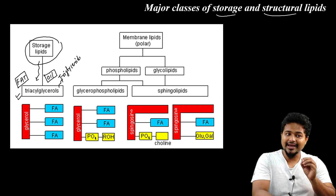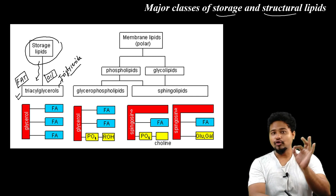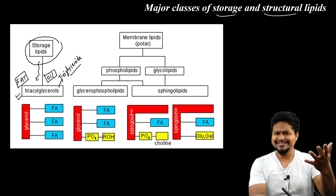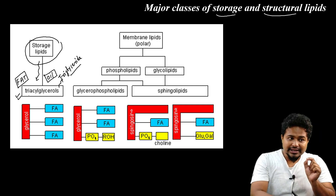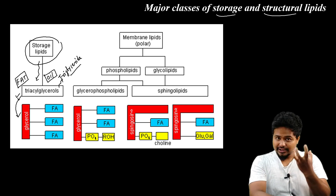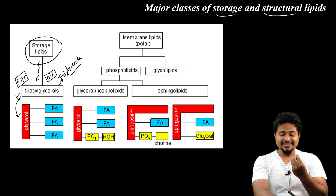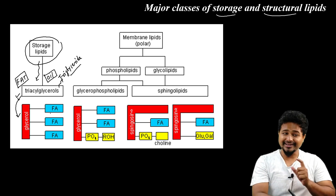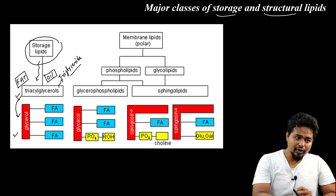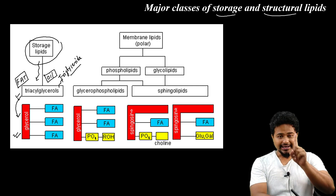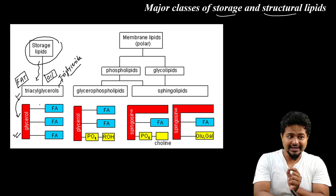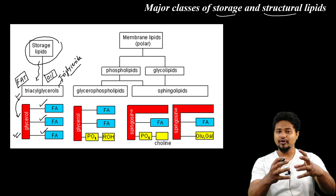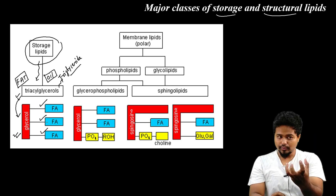The components of triacylglycerol are: one glycerol molecule and three fatty acids. So a triacylglycerol molecule consists of one glycerol plus three fatty acids.